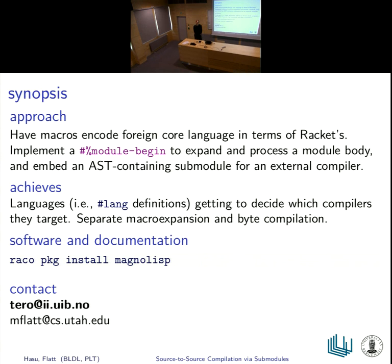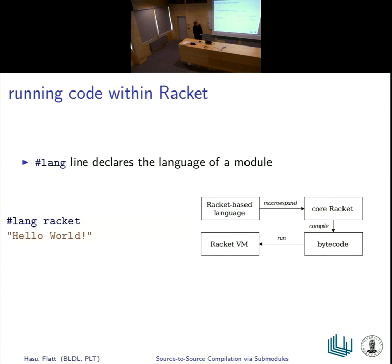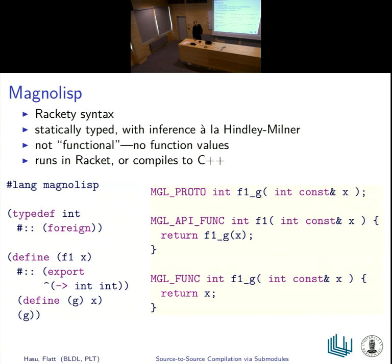In response to a question about expansion ratio: in this basic case there's not much difference, but the point of exposing the macro system is that — as we saw yesterday with inlining examples — the expansion can be much longer. If we start using macros that generate lots of functions from a single declaration, such as declaring a structure type with accessors, or doing inlining, then the ratio can quickly increase.